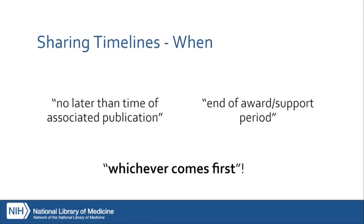The policy states that shared scientific data should be made accessible as soon as possible and no later than the time of an associated publication or the end of the award support period, whichever comes first. A publication triggers the release of the data underlying that publication. This means researchers must share the data reported on or used for an associated publication. It's also important to realize that not all data always leads to a publication, and many portions of a dataset may not be directly used for an individual publication.